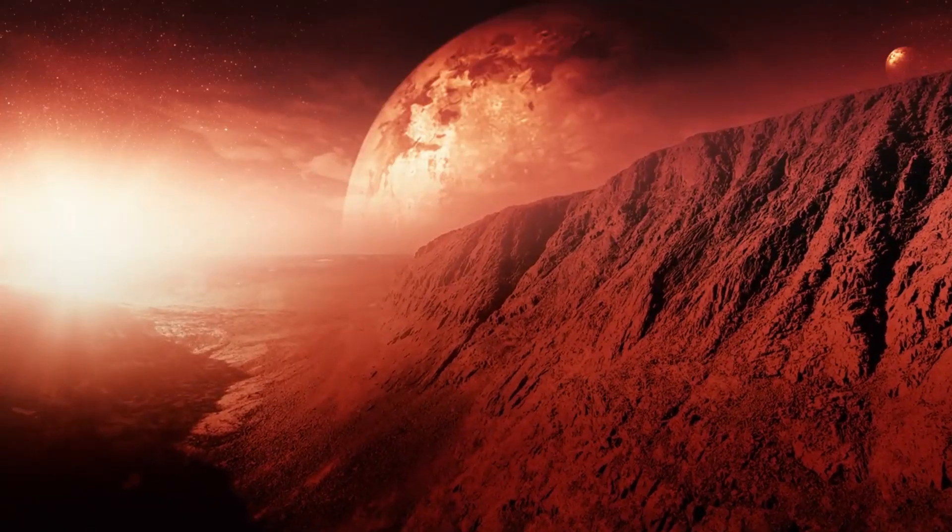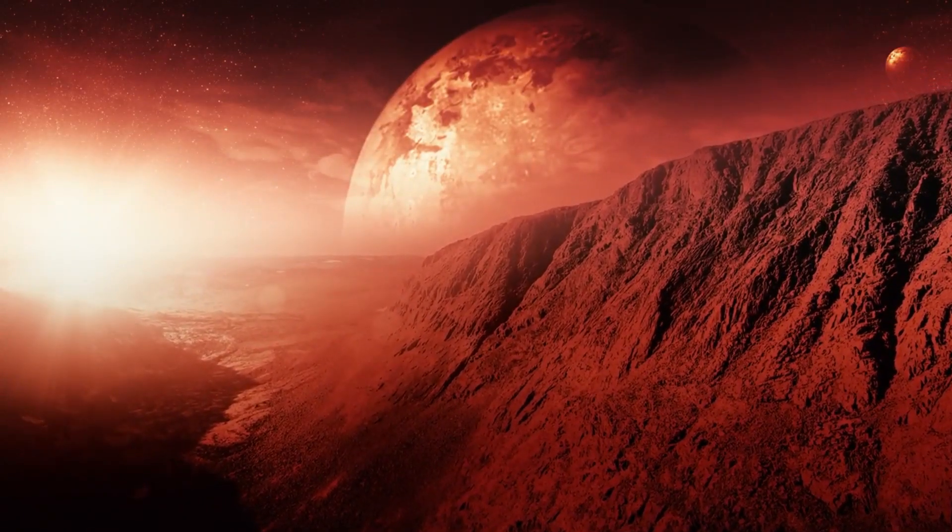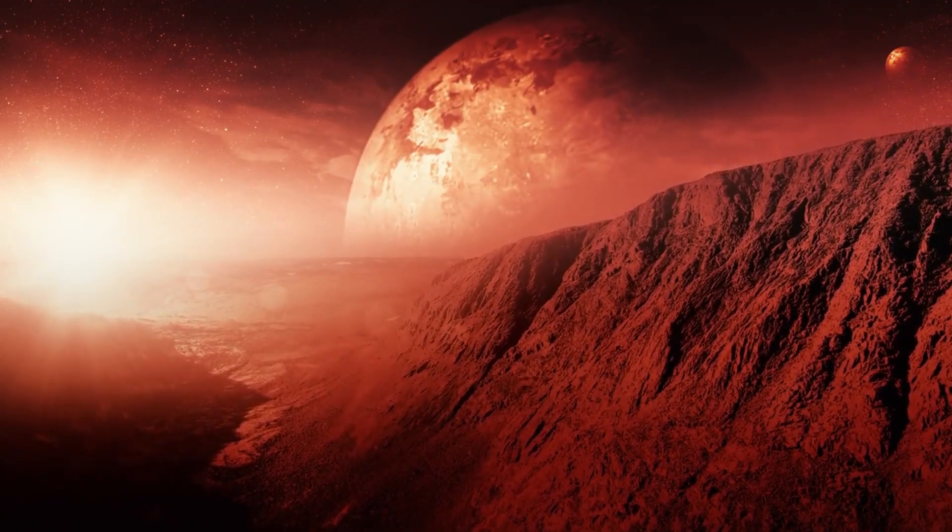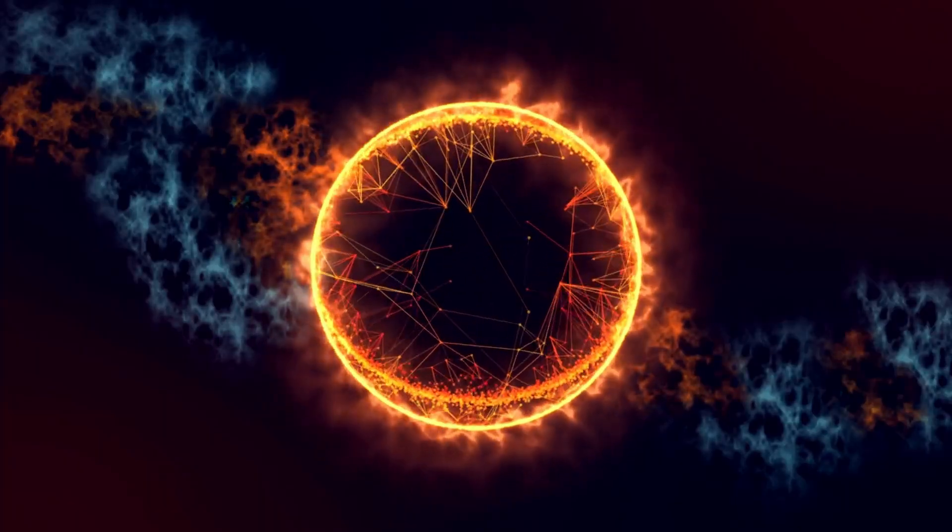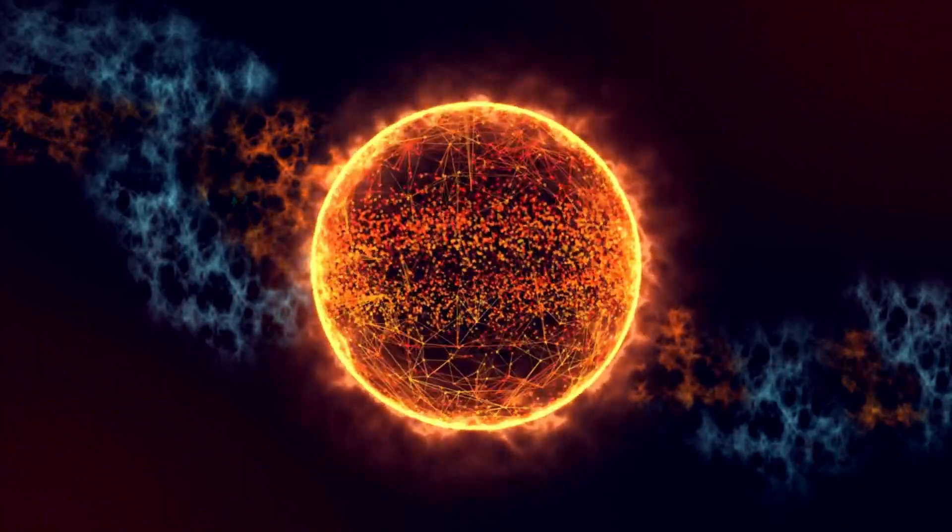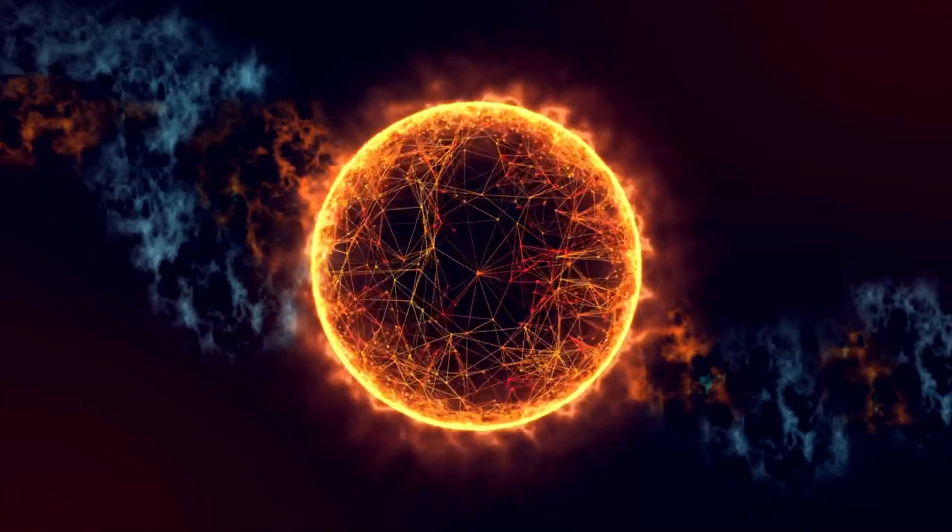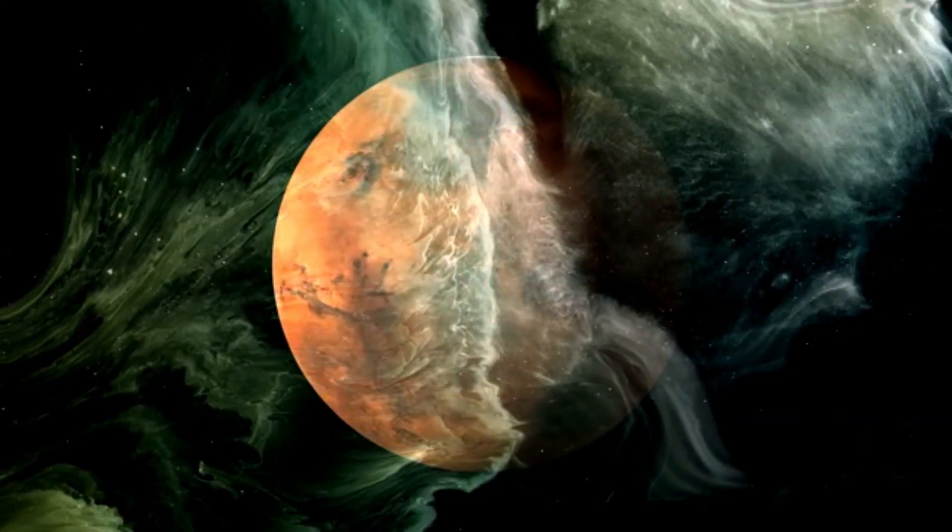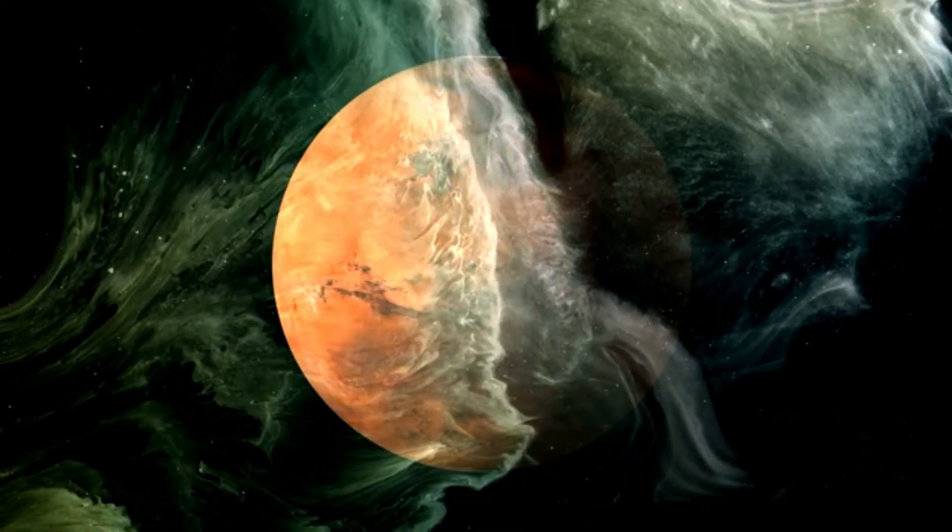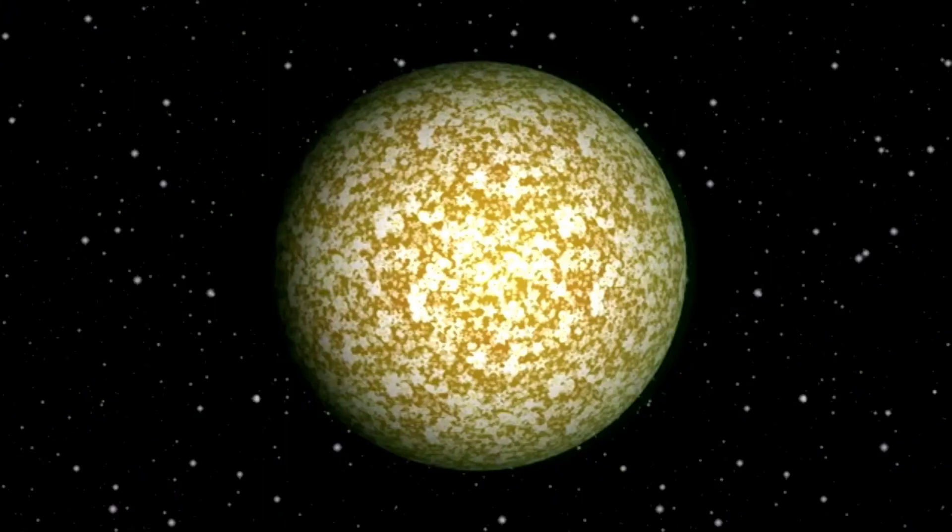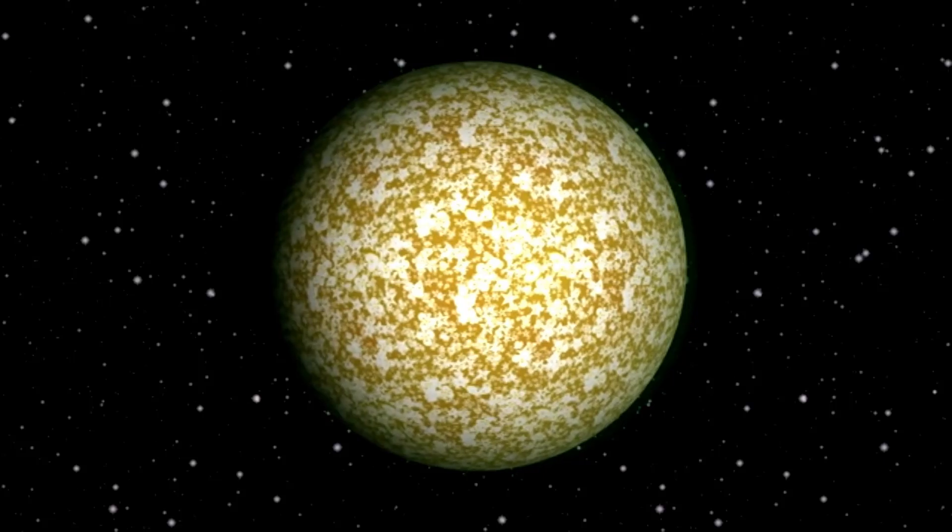Proxima Centauri b isn't alone. It has a companion, Proxima Centauri c, which orbits farther from the star. This planet has an orbital period of around five Earth years and was discovered in 2020 using pre-recovery Hubble data. What's even more interesting about Proxima c is that it appears to be a very bright world, possibly due to the presence of a ring system. There are more discoveries yet to be made in the Proxima Centauri system.